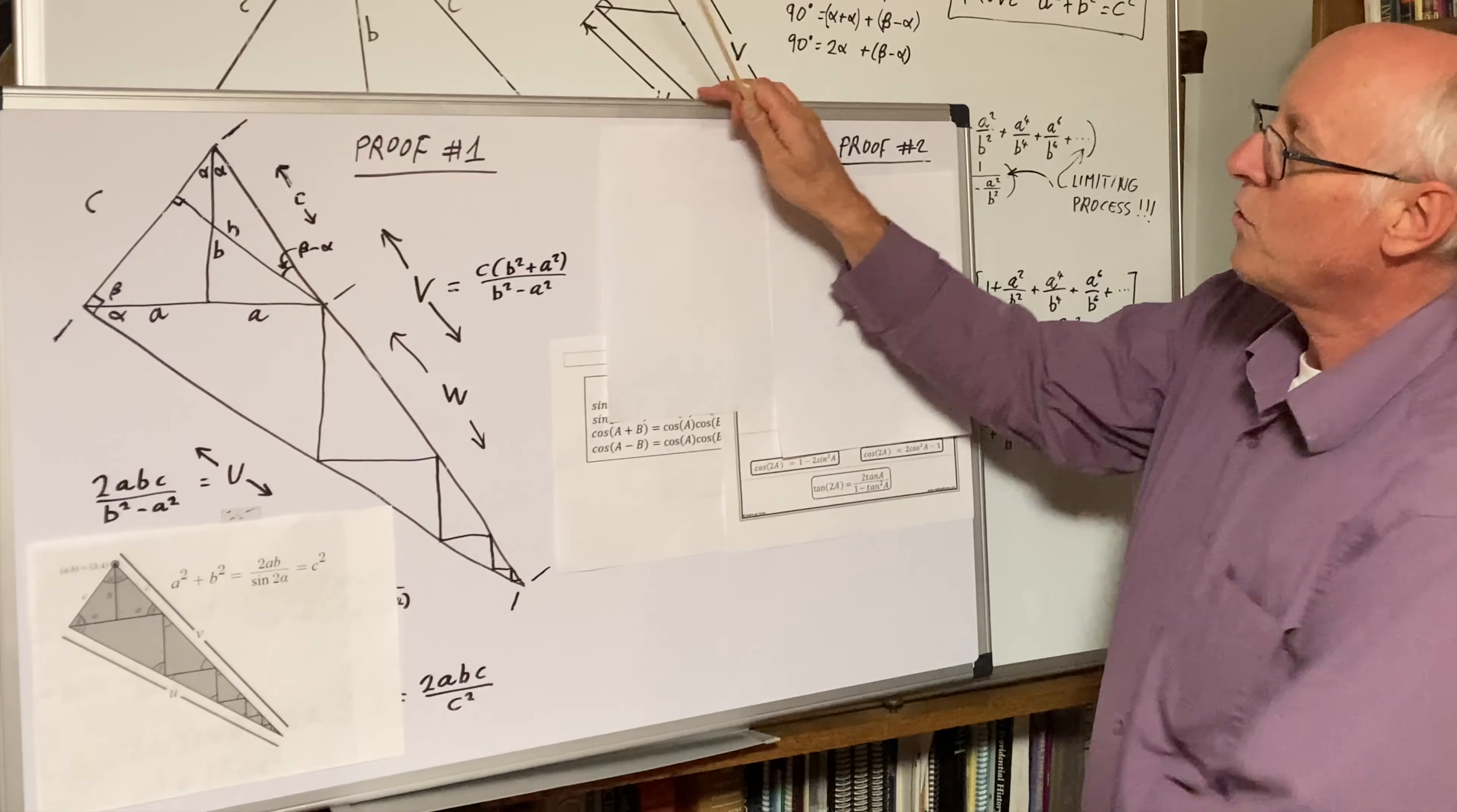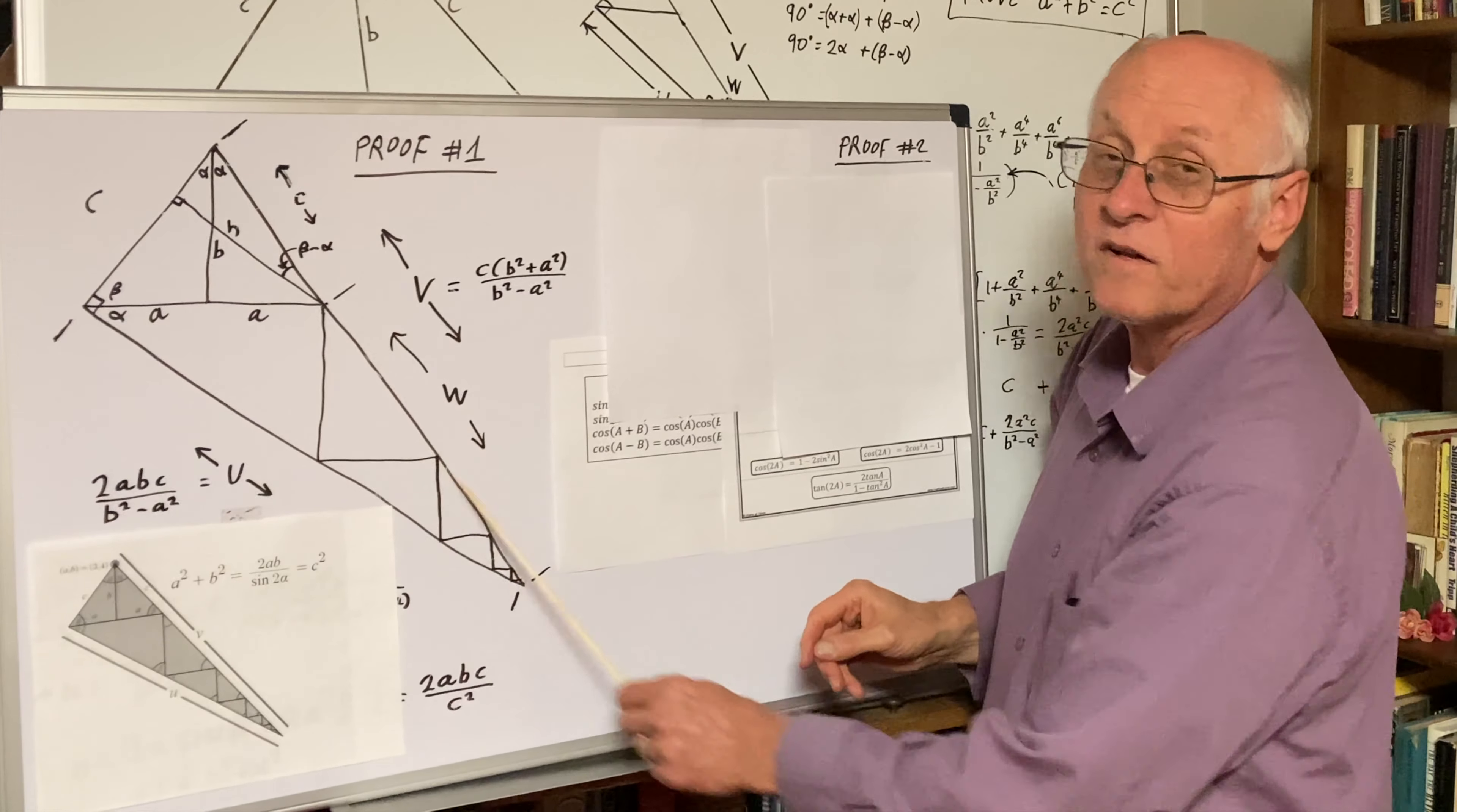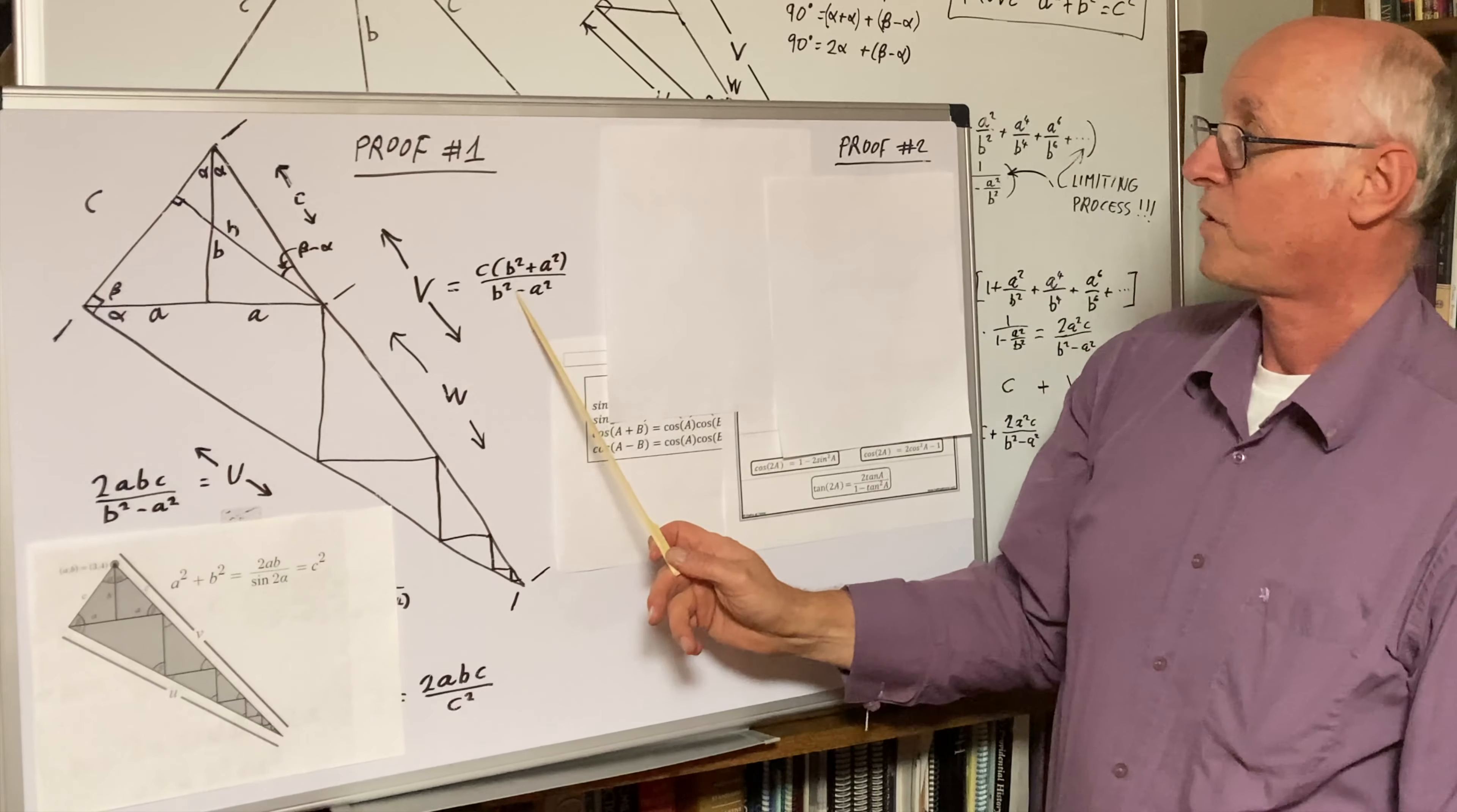Proof number one. What we have is here's our typical waffle cone setup. We've calculated V, that's this overall distance consisting of C plus W, and also U. These are the values we've calculated previously.